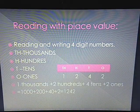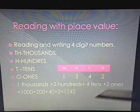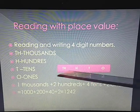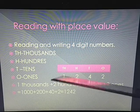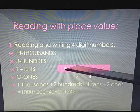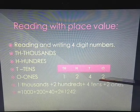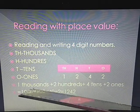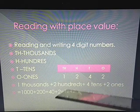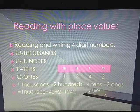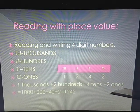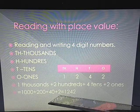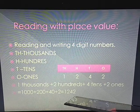Now, reading and writing four-digit numbers. For example, this number — how will we read it? We will read the number as 1,242. With place values, how will we write it? We will write 1 thousand plus 2 hundreds plus 4 tens plus 2 ones, that is 1000 plus 200 plus 40 plus 2, which equals 1,242.